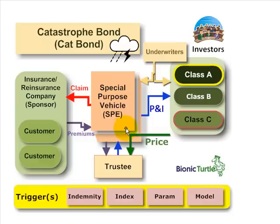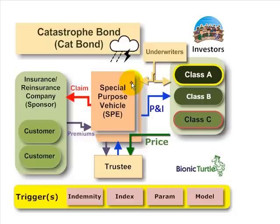A special purpose vehicle or special purpose entity is constructed that is bankruptcy remote, and with the help of underwriters, securities are issued to investors. Those investors may be in tranche classes in exchange for their cash payment. The investors contribute the initial purchase price and receive securities, which come with a promise of principal and interest payments. The investor's cash is deposited with the trustee and that is pledged as collateral.